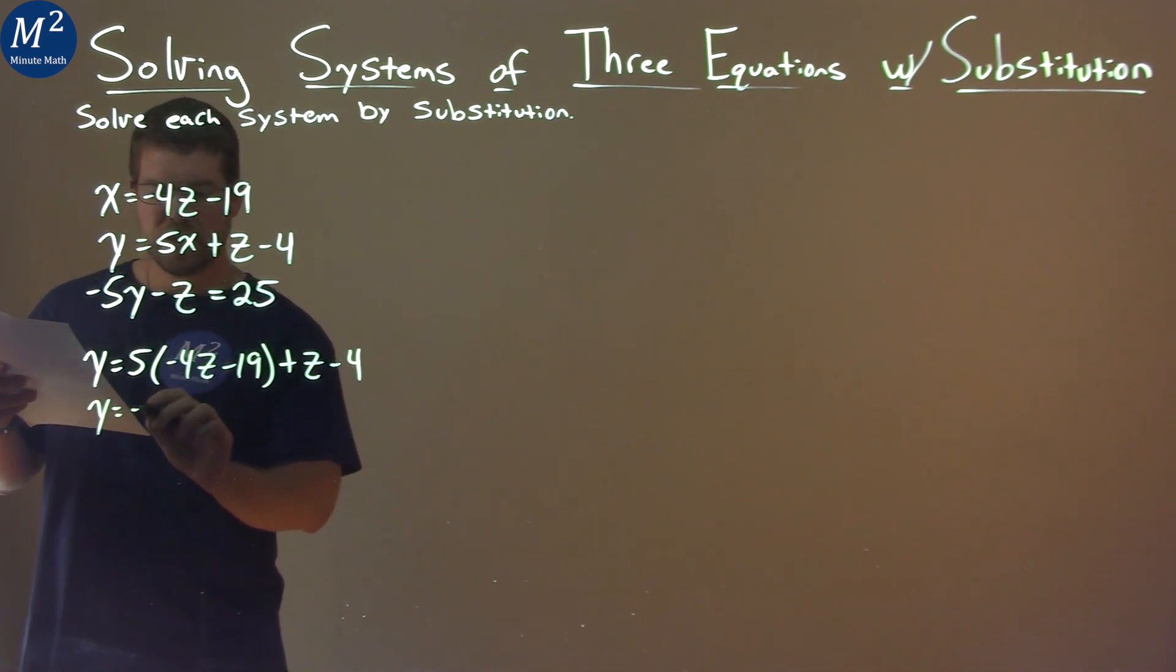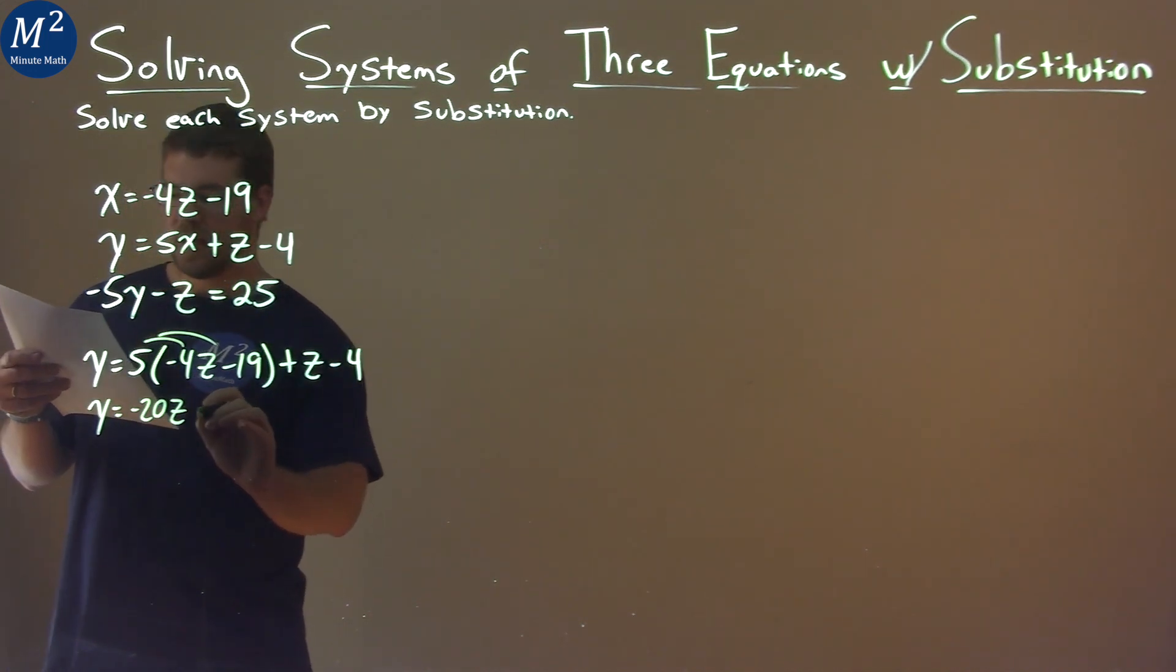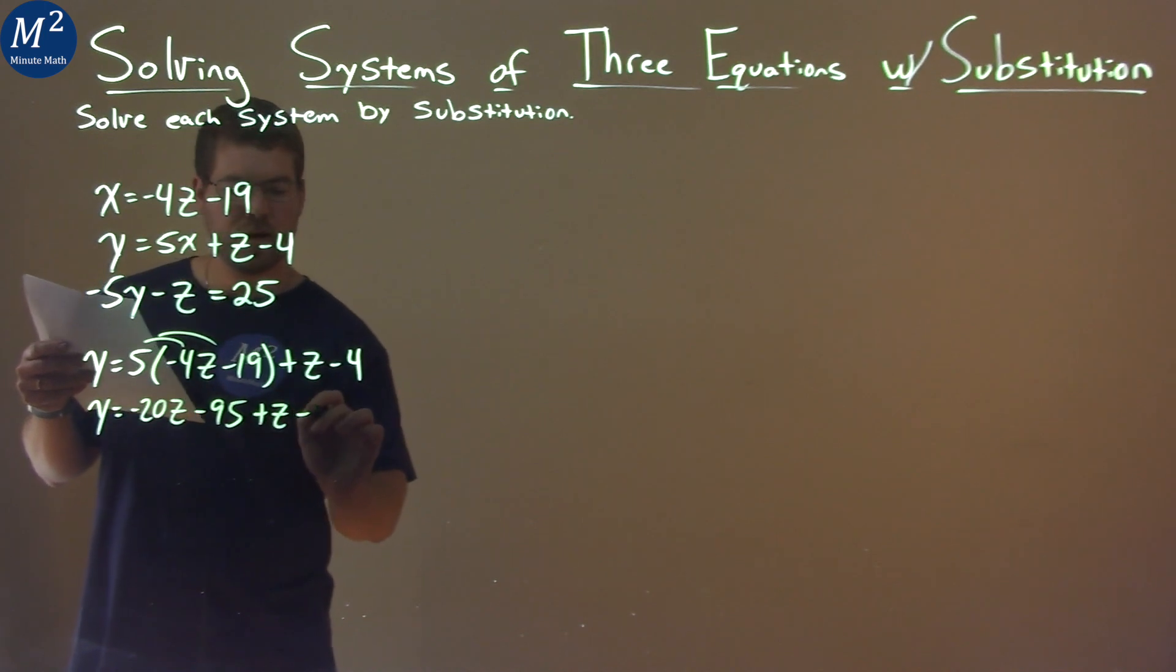5 times negative 4z is negative 20z, and then 5 times negative 19 is negative 95. And then we have plus z and minus 4.